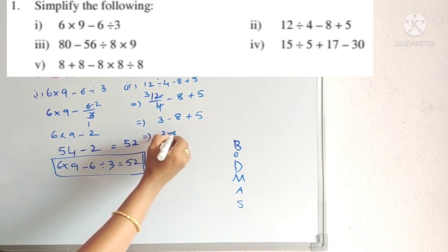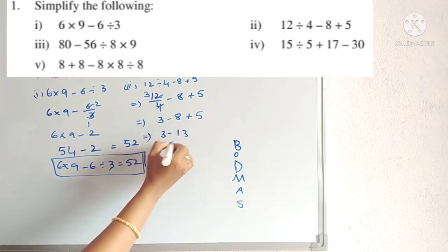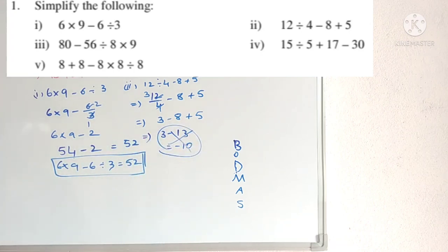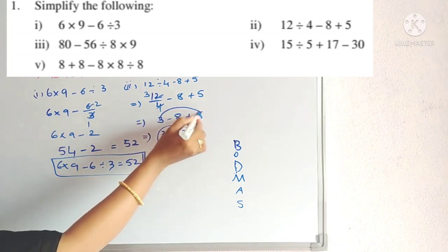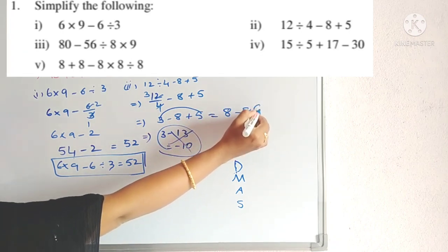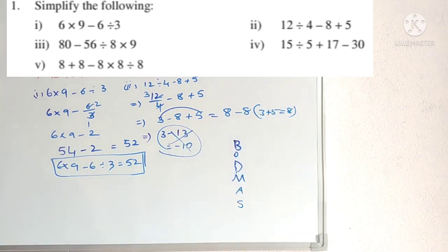We must do addition first. The positive numbers are 3 and 5. So add them: 3 + 5 = 8. Then 8 − 8 = 0. The answer for the second problem is 0. It is not −10. Don't do 8 + 5 = 13 then 3 − 13. We have to follow the rule.